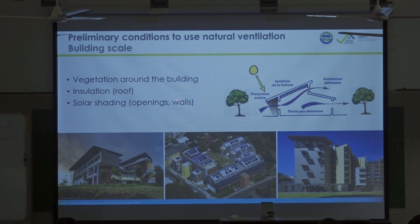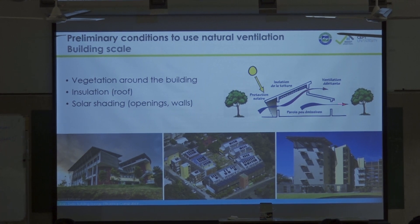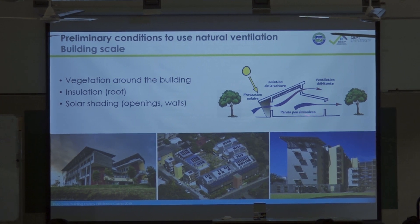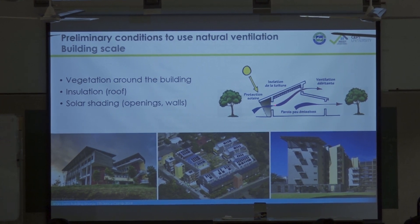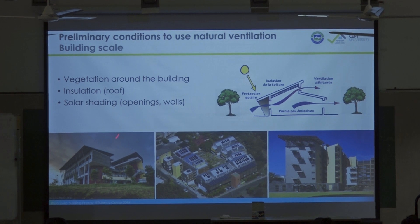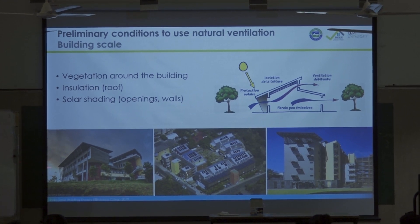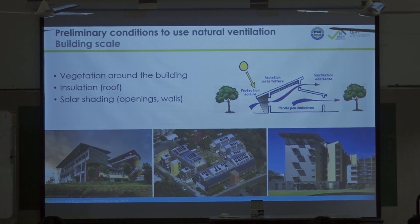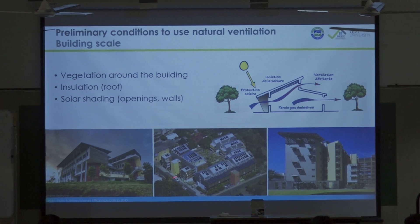At the building scale, if you want to use natural ventilation you have to have a well-designed envelope — that means insulation of the roof, solar shadings, and trees around — so that you have perfect conditions. Otherwise it will be too hot inside and you will feel uncomfortable. These buildings here have lots of vegetation around them and solar shadings everywhere.